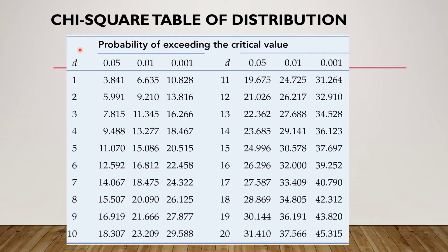This table is very important and searchable on the internet. It's not only 0.05, 0.01, or 0.001 — you can also have other levels of significance like 0.10 or 0.005. The degree of freedom is not limited to 10; it can go up to 100 or 1000. The bigger the sample values, the bigger the degree of freedom.